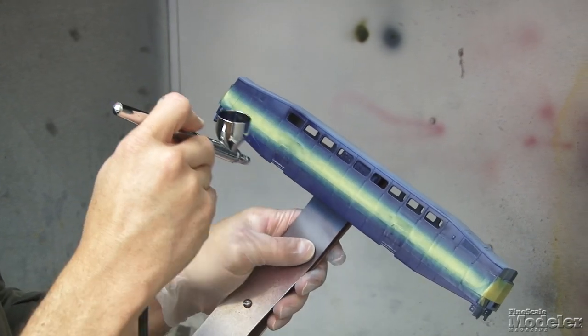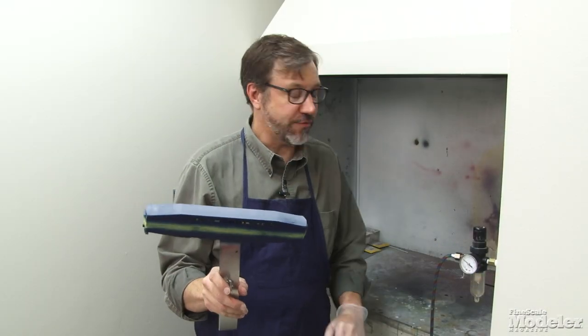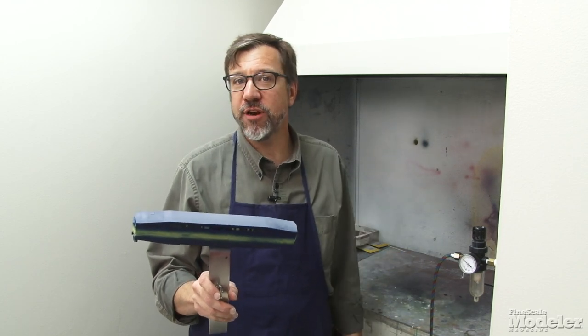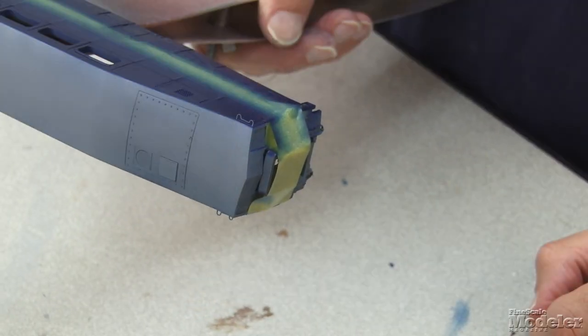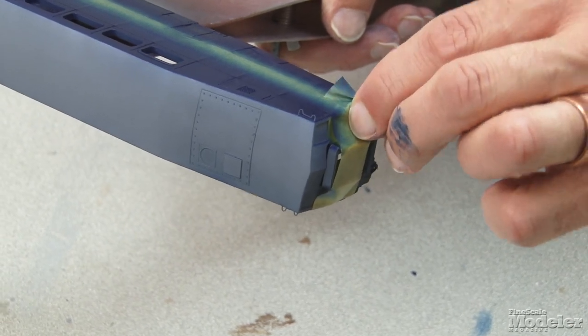So there we have it. I've put the blue on. I'm going to let that sit for a few minutes while I clean out my airbrush. But I want to take the tape off fairly quickly again to minimize the ridges that can come up at the edge of tape.